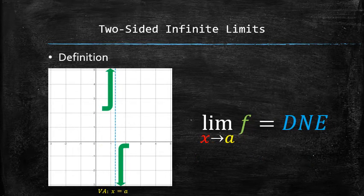Now, if for whatever reason the left and the right-sided limits do not match, or the function doesn't exist on either side, then we say that the two-sided limit doesn't exist and simply write DNE.